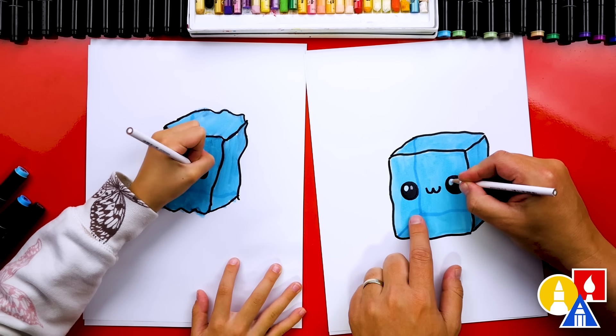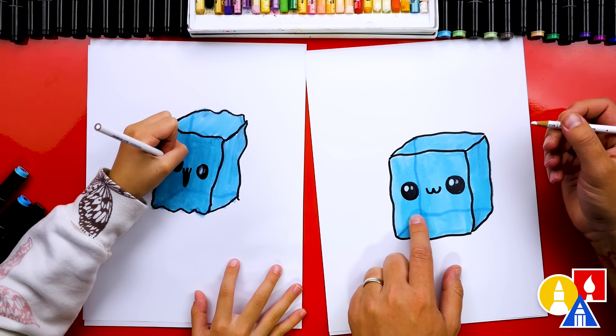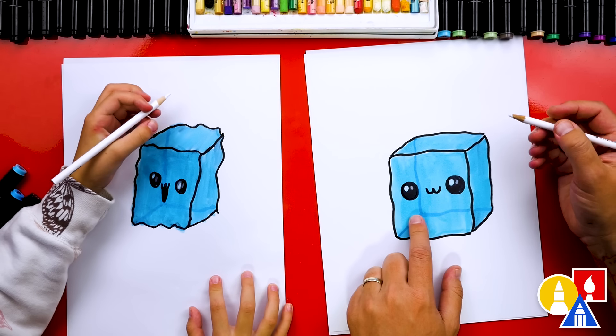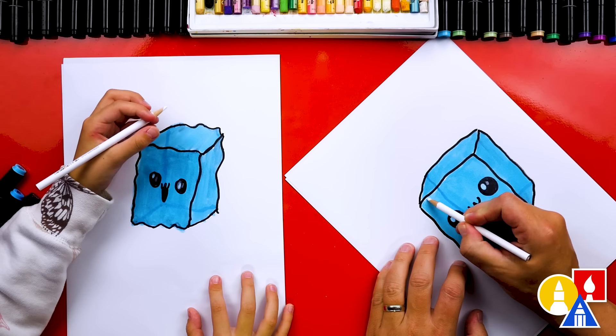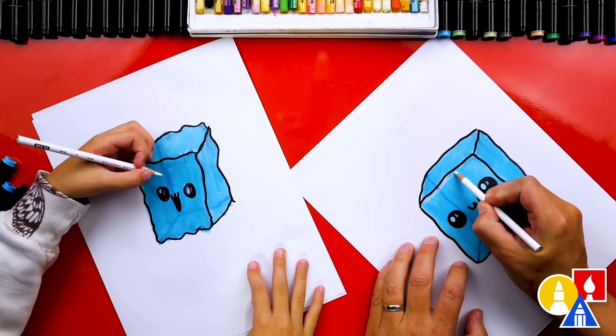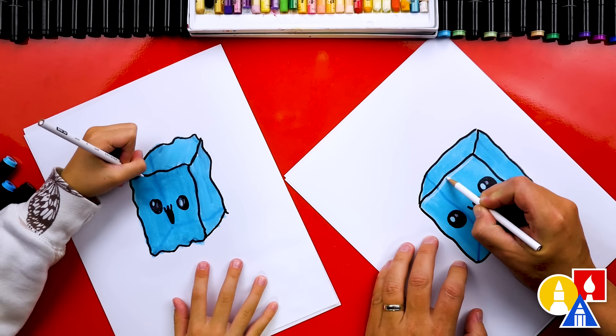So we can color on top of the blue. It makes it look white. And then also a small highlight. Oh, also we can add a highlight on this top edge of our ice cube.